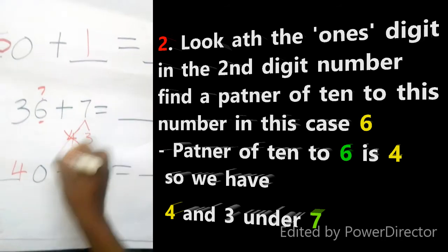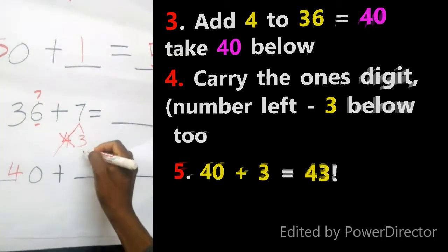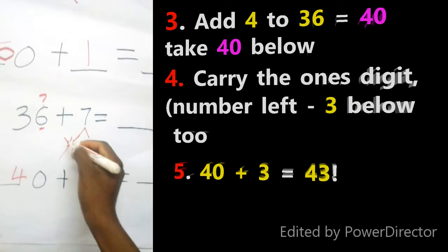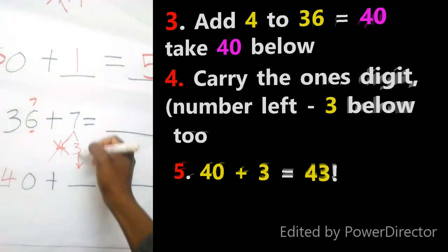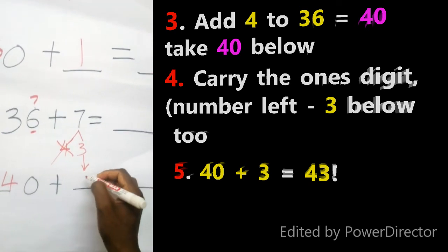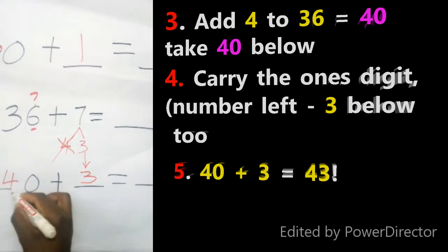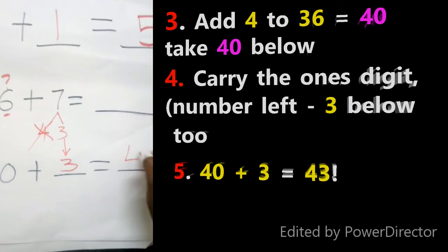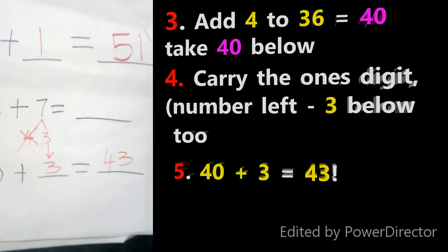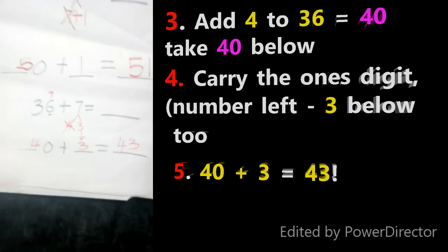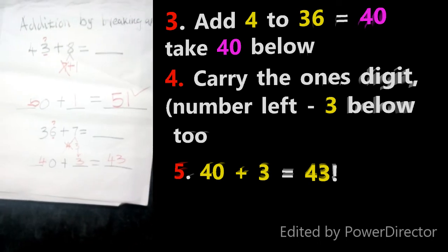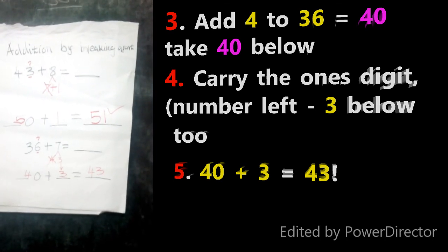So, we cross out this. We don't longer need it here. Then we bring down, we no longer need the 4 right here. So, we bring down 3. And the answer will be 40 plus 3. And we have what? 43. We have simply gotten the answer by breaking it apart.